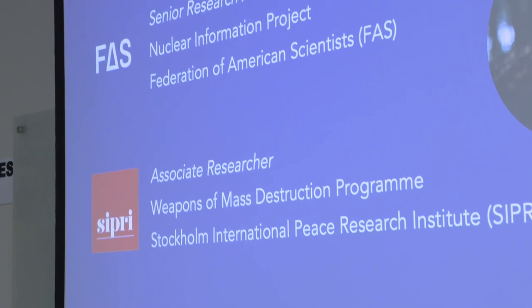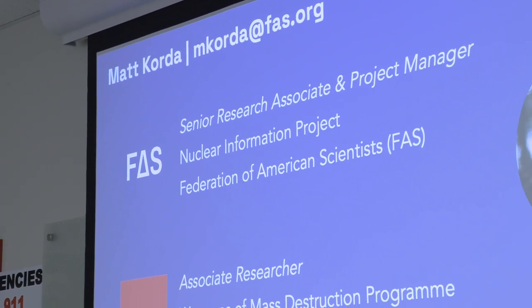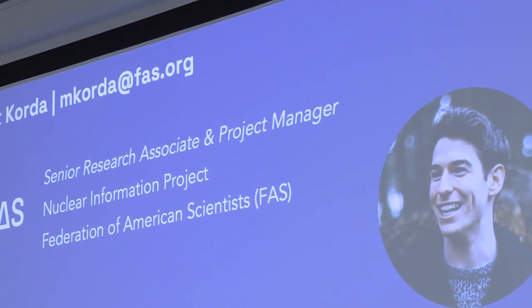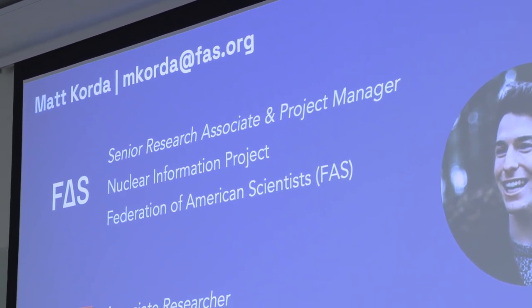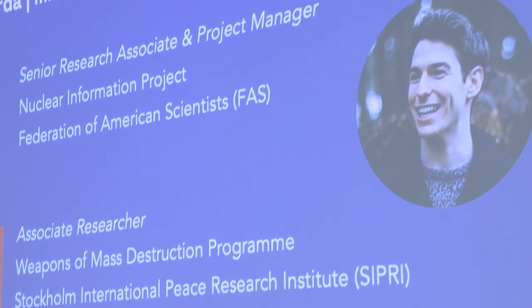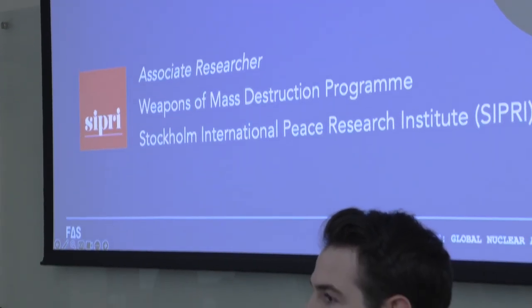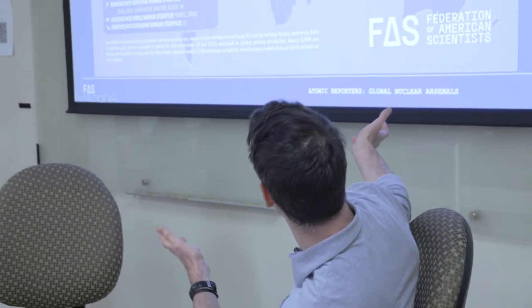FAS, the Federation of American Scientists, was founded in 1945-1946 by many of the same researchers who worked on the first atomic weapons. Today what we do is we make unclassified estimates about nuclear forces and trends, and we think about risks — all the things we've talked about today. Our major research output is something like this.